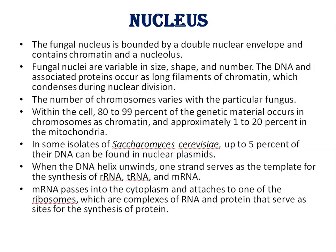The fungal nucleus is bounded by a double nuclear envelope and contains chromatin and a nucleolus. Fungal nuclei are variable in size, shape, and number. DNA-associated proteins occur as long filaments of chromatin, which condense during cell division. The number of chromosomes varies with the particular fungus. Within the cell, 80–99% of the genetic material occurs in chromosomes as chromatin, and approximately 1–20% is in the mitochondria. When the DNA helix unwinds, one strand serves as a template for the synthesis of rRNA, tRNA, and mRNA. The mRNA passes into the cytoplasm and attaches to ribosomes, which are complexes of rRNA and protein that serve as sites for protein synthesis.